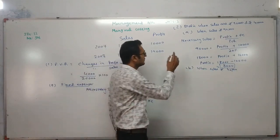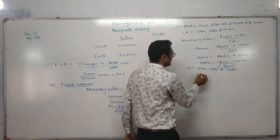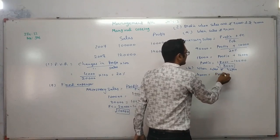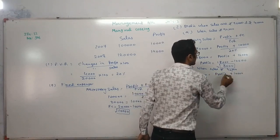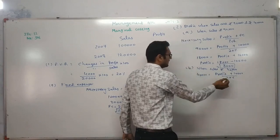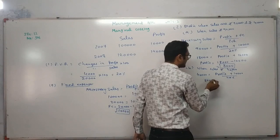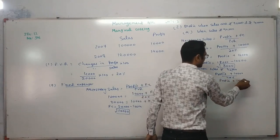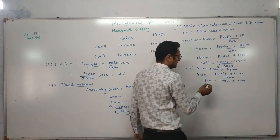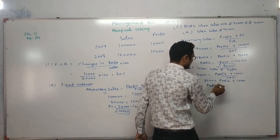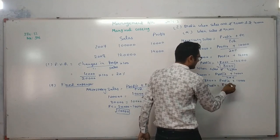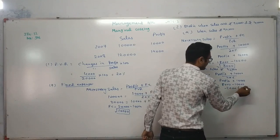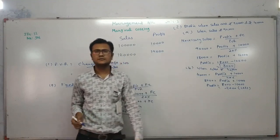For the second case, when sales = 40,000, using the same formula: 40,000 × 20% = 8,000 = profit + 10,000, so profit = 8,000 − 10,000 = −2,000. Since it is negative, this is actually a loss.